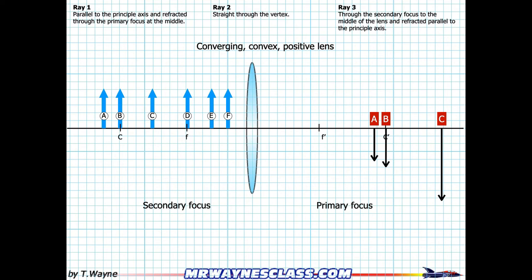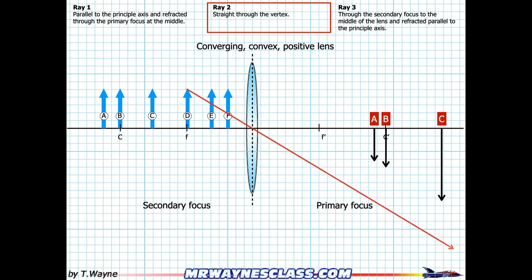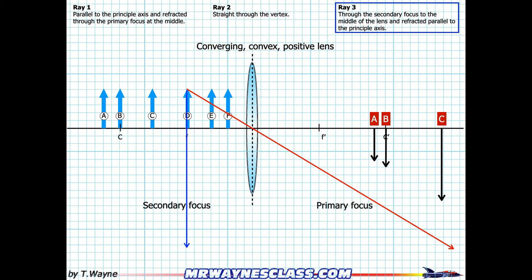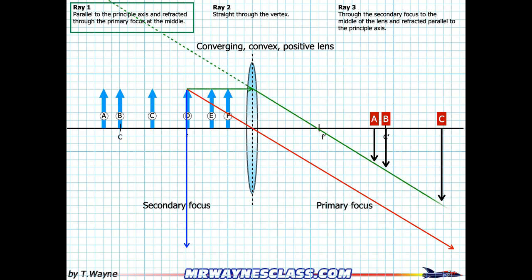Let's look at D when it's at the focus itself. There's my approximation line; I start with a straight line through the vertex. Then I try ray three through the secondary focus to the middle of the lens to refract it parallel to the principal axis — but D is on the secondary focus, so the ray would never even touch the lens. Let's try ray one: parallel to the principal axis then refracted through the primary focus. But both the red and green rays have the same slope, so they're not going to intersect. Our image isn't going to be formed — we can just say it's out at infinity.